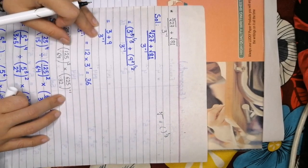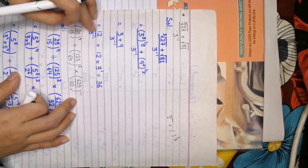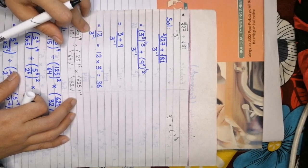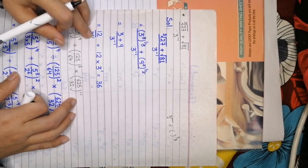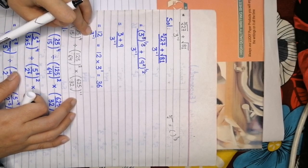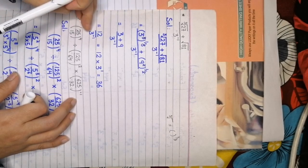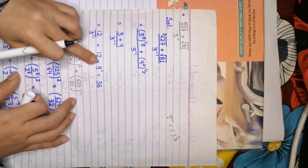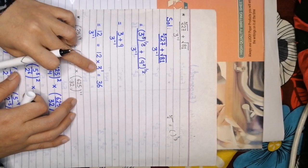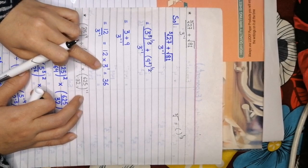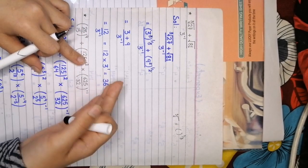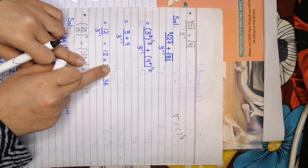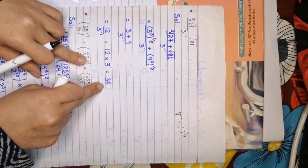We can cancel 3 with 3 and 2 with 2, leaving power 1 only. So 3 raised to power 1 equals 3, and 9 raised to power 1 equals 9. At the denominator we have 3 raised to power minus 1. Now we add the numerator: 9 plus 3 equals 12. Since minus 1 is at the denominator, we move it to the numerator. We multiply 12 by 3 and get our final answer 36.